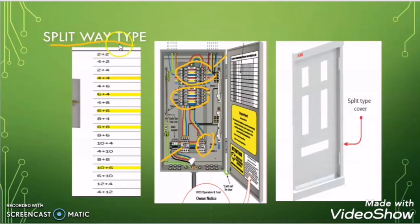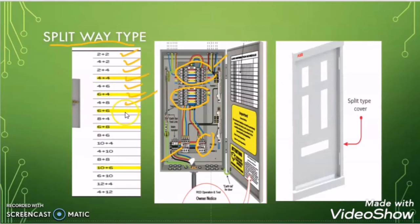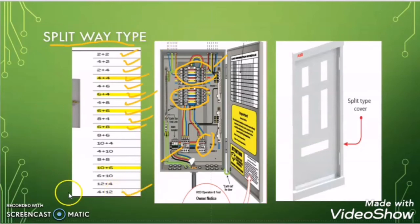But in the split way type DB enclosure, the outgoing breakers are divided into two sections. The first section is protected by one RCD device and the other section is protected by another RCD device. The split way type enclosure can be of 2+2, 4+2, 2+4, 4+4, 4+6, 6+4, 4+8, 6+6, or 4+12 way type.